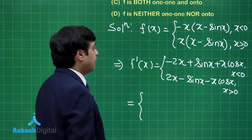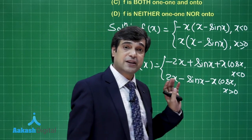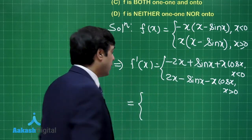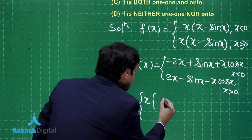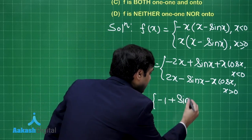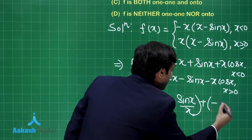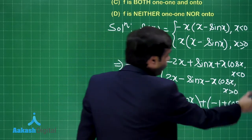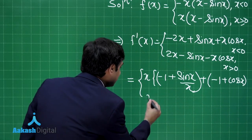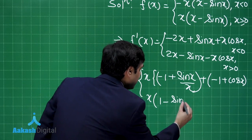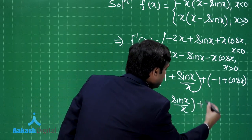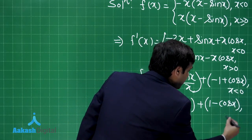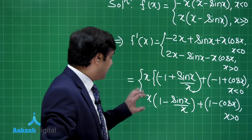Taking x common, we can write the derivative for x < 0 as x[(−1 + sin x / x) + (−1 + cos x)], and for x > 0 as x[(1 − sin x / x) + (1 − cos x)]. The first applies when x < 0 and the second when x > 0.